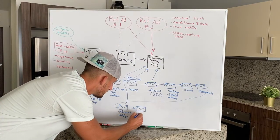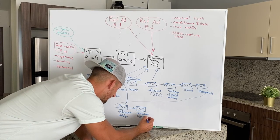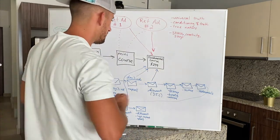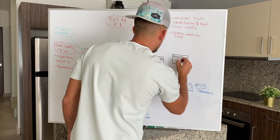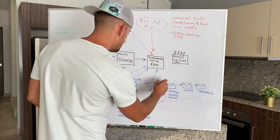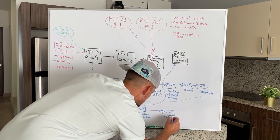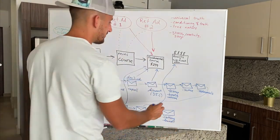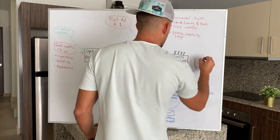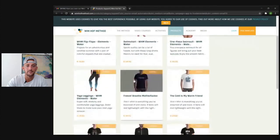Now he's also telling you about other offers, starting to introduce some other things: get in-person coaching, join a life-changing retreat, have a one-of-a-kind live Wim Hof experience. So it looks like these might be some upsells — probably higher ticket offers like in-person events, a winter expedition. So a little bit later on in the email follow-up, they start to introduce some higher end offers. And this last email looks like it's going to be a downsell — no longer talking about that fundamentals course, but pushing the clothing line, browse the library, check out different music, explore the collection. So just a line of clothing that they're selling as well.